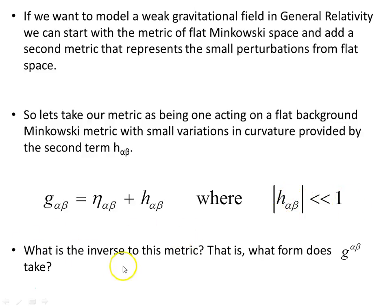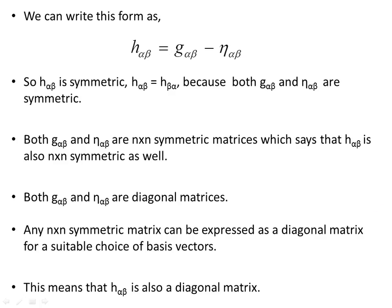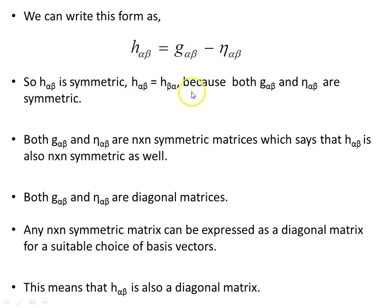Now, what is the inverse of this metric? That is, what form does G contravariant alpha-beta take? We can rewrite this: h_αβ equals G_αβ minus eta_αβ. This h_αβ term is symmetric in its two lower indices alpha and beta, because both G_αβ and eta_αβ are symmetric, so H_αβ is also symmetric.